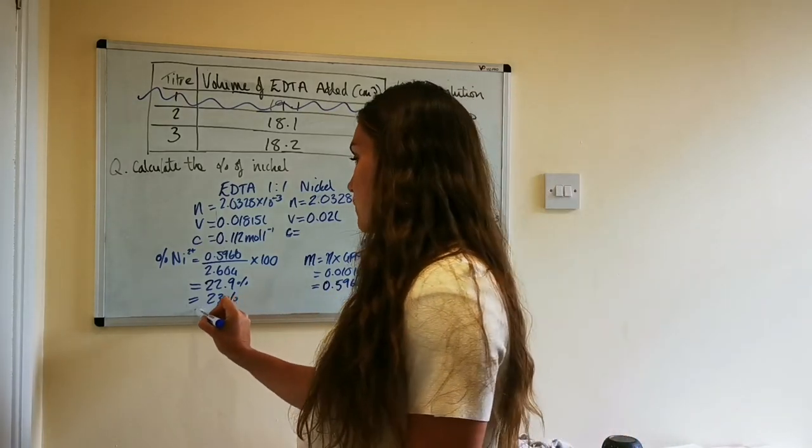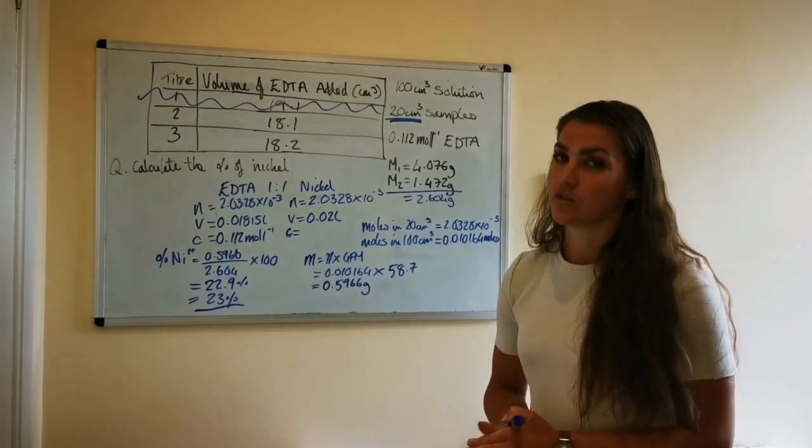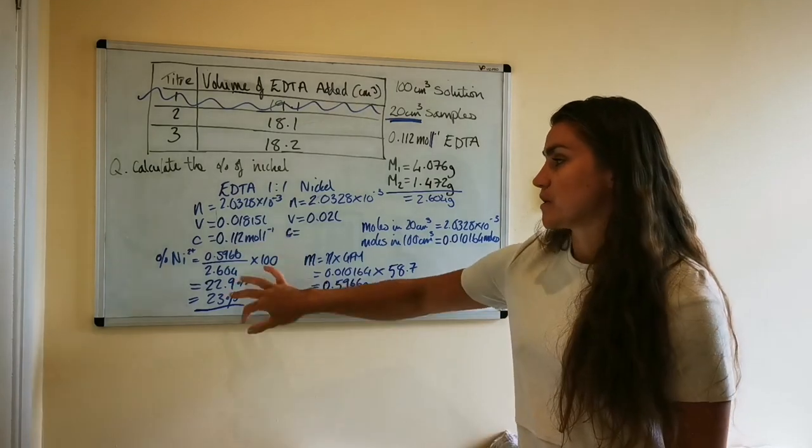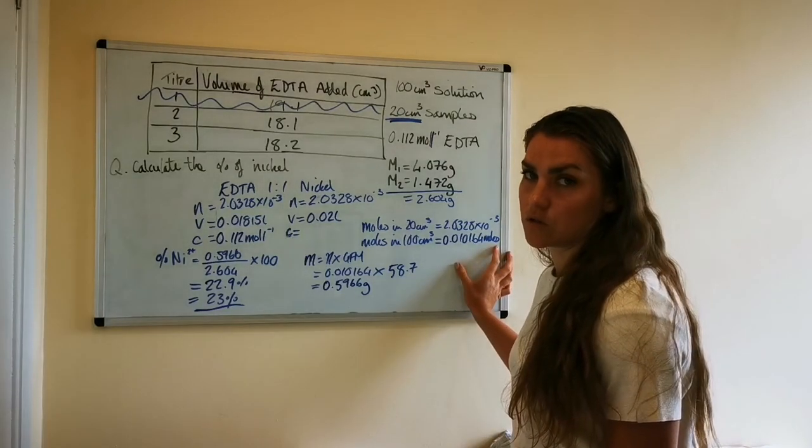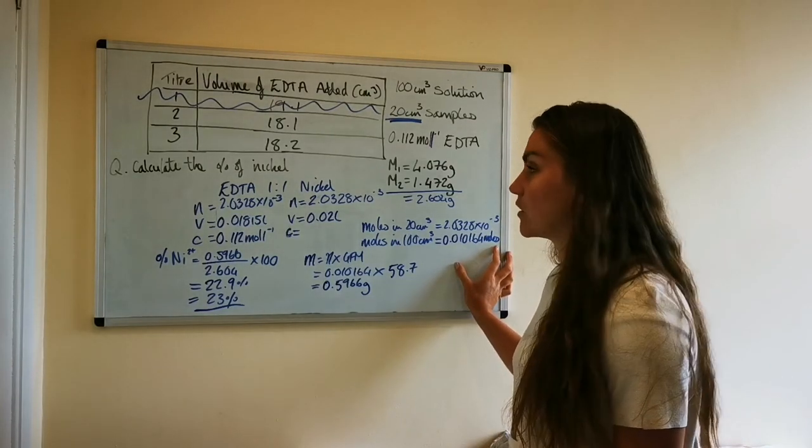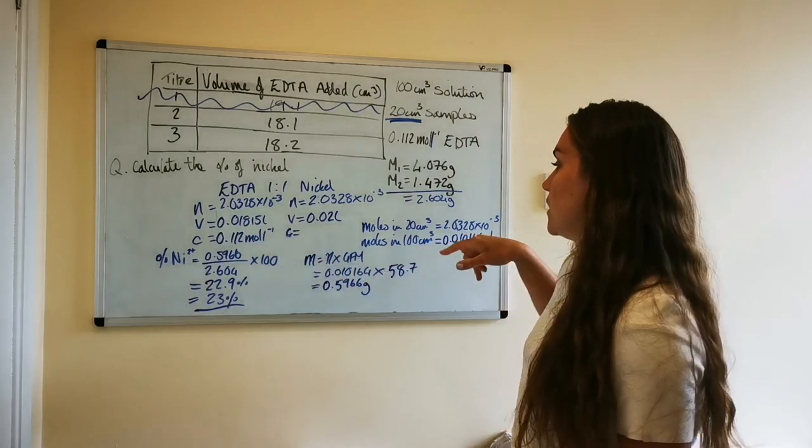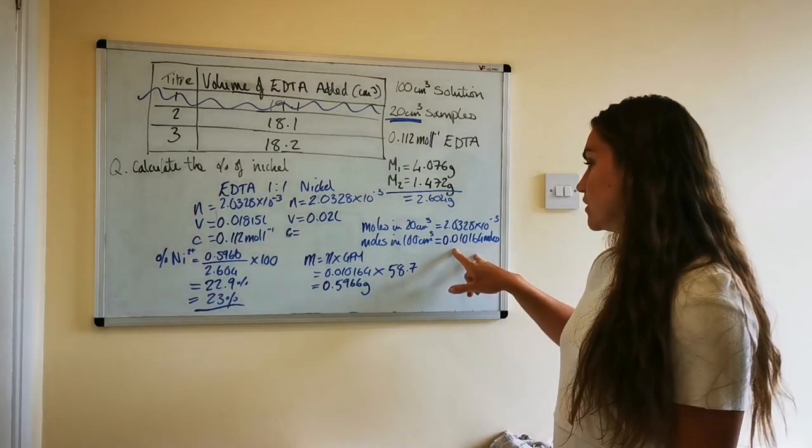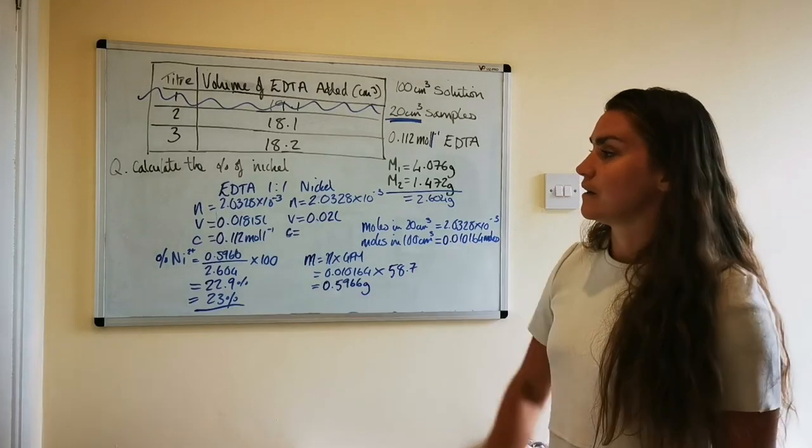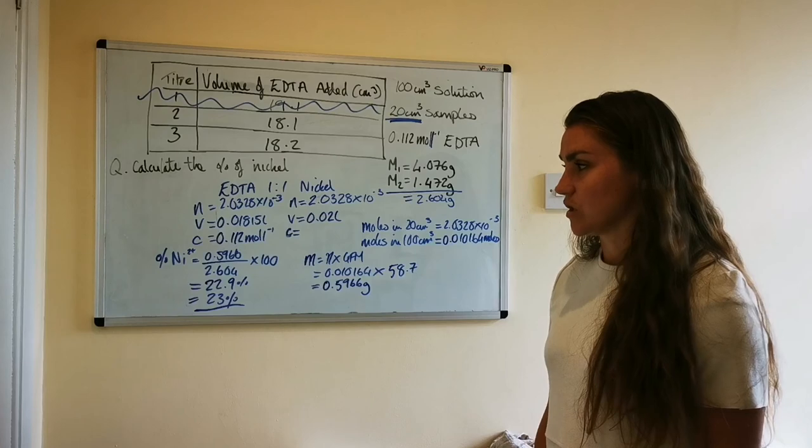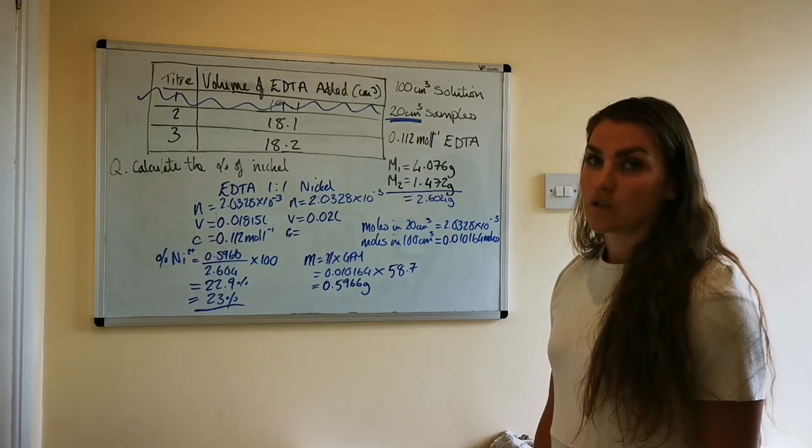Okay so it is quite similar to the titration calculations you've done before, however it's the percentage bit at the end that's probably the new bit. Scaling up you would have probably done in some redox calculations in higher. Okay so you always start off calculating the number of moles that the titration results give you, scale up the solution to the total volume of the solution if required, convert the number of moles into a mass, and then you use just a general percentage calculation to work out then what percentage of the metal ion was in the solution.